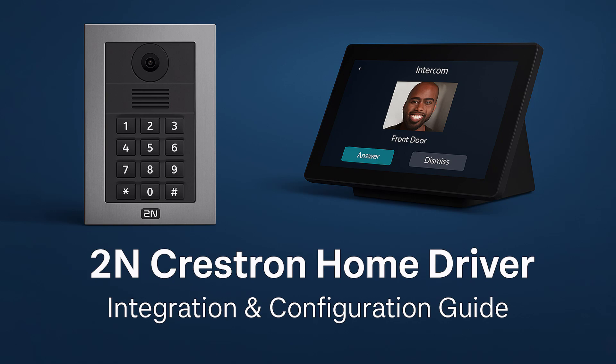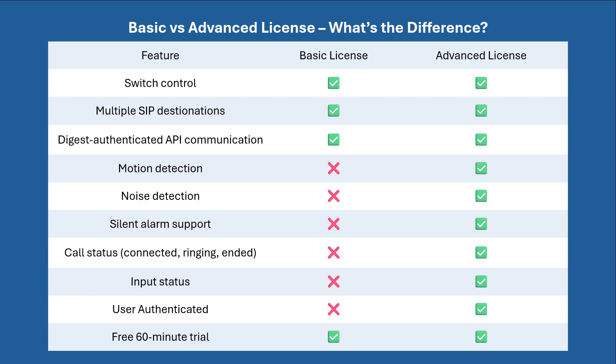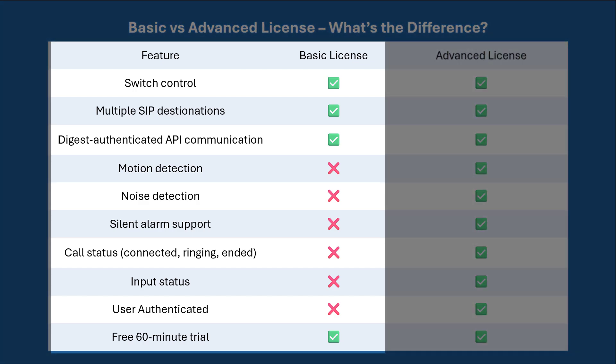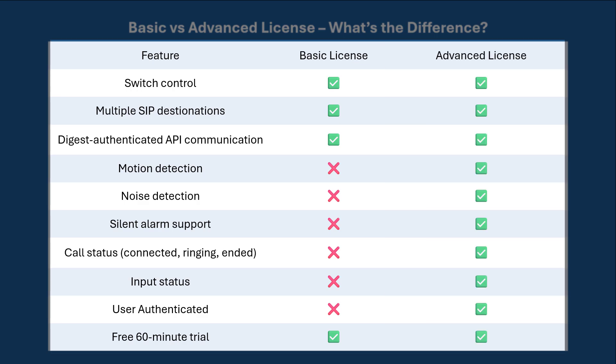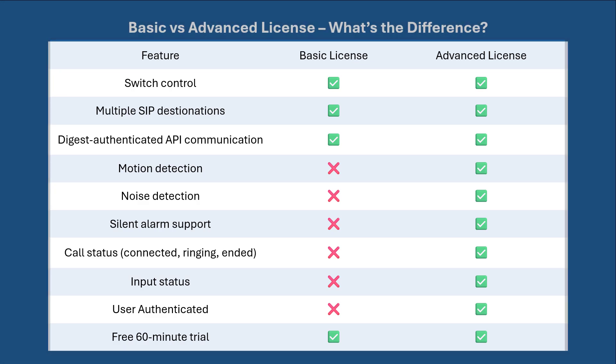We'll go step by step through installation, configuration, and licensing, and I'll show you the driver in action within the Crestron home interface. The driver comes in two versions. The basic version includes SIP calling and control of up to four switch outputs. The advanced version adds event triggers including motion and noise detection, input state changes, and user authentication events. All communication is secured using digest authentication.